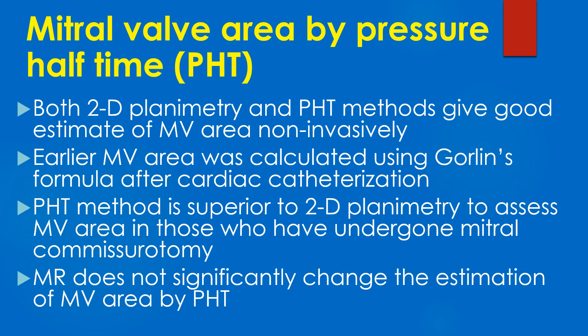Both two-dimensional planimetry and PHT methods give a good non-invasive estimate of mitral valve area. Earlier, mitral valve area was calculated using Gorlin's formula after cardiac catheterization. The PHT method is superior to two-dimensional planimetry for assessing mitral valve area in those who have undergone mitral commissurotomy. Mitral regurgitation does not significantly change the estimation of mitral valve area by PHT.